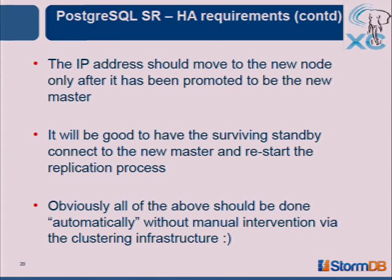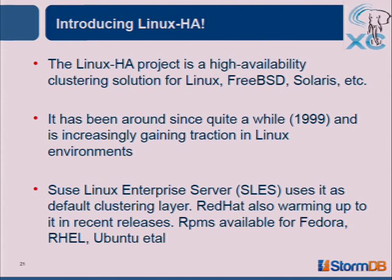It's really important: if the primary node goes down, only one of the standbys should be promoted to primary — we don't want both standbys trying to get promoted. The IP address should move to the new master only after it has been promoted. You don't want applications talking to a standby — you want them talking to a proper read-write primary. And it would be good if the surviving standby connects to the new master so you continue with your HA setup. This should all happen automatically — you're not going to be in the office waiting for disaster.